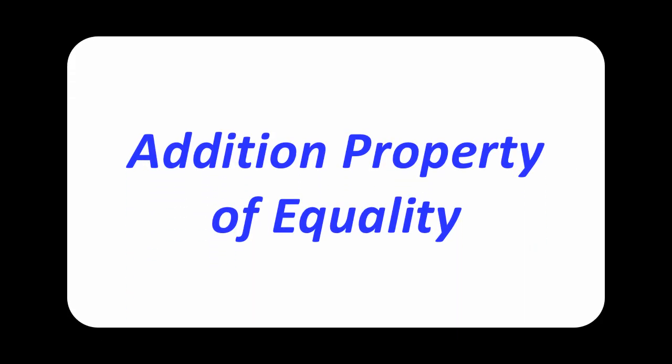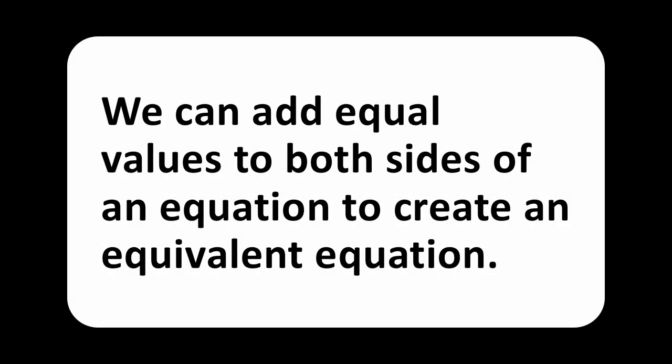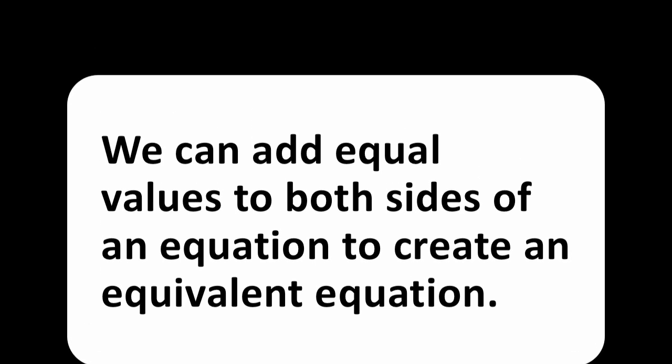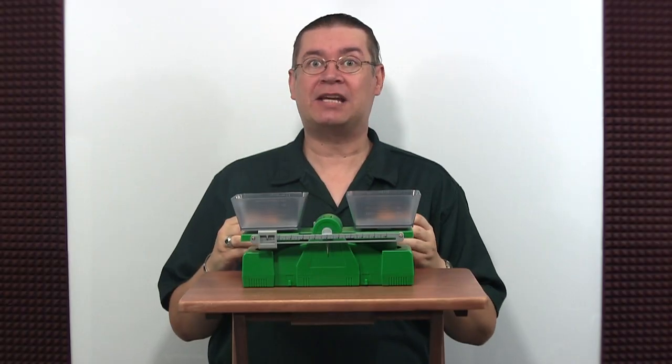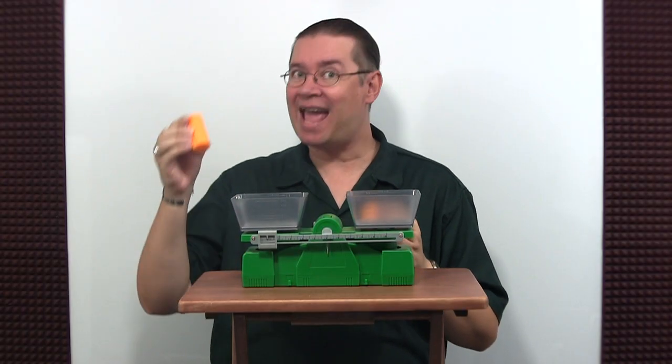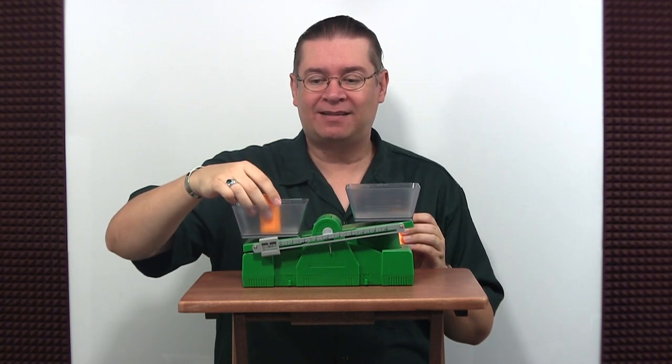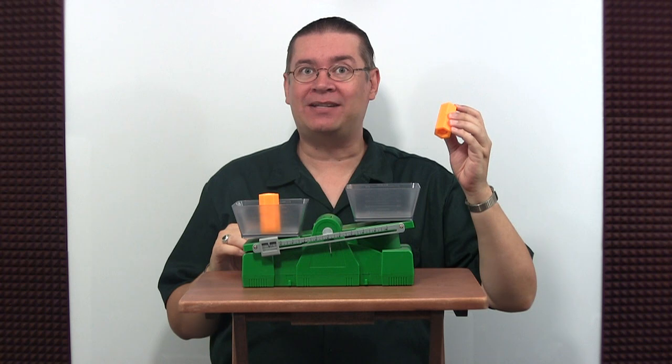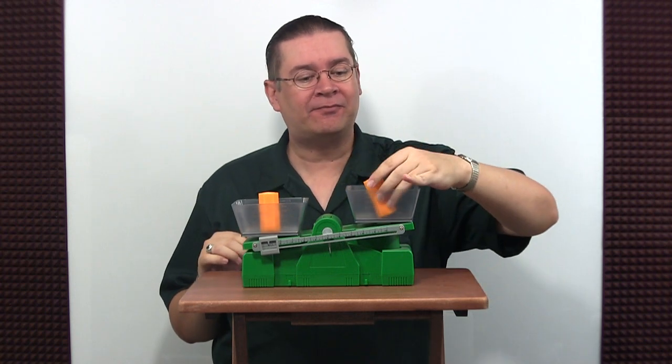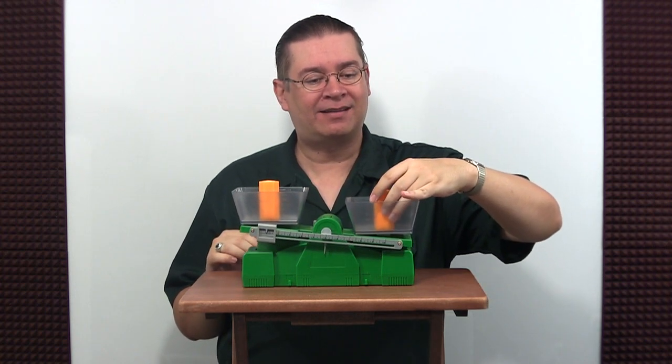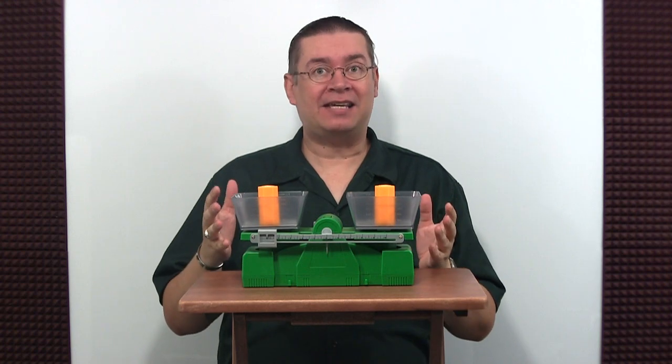Addition property of equality: we can add equal values to both sides of an equation to create an equivalent equation. Let's use our scales again to demonstrate this property. I'm going to add a certain amount of weight to one of the pans, so now I must add the same amount of weight to the other pan. And now they're balanced again.